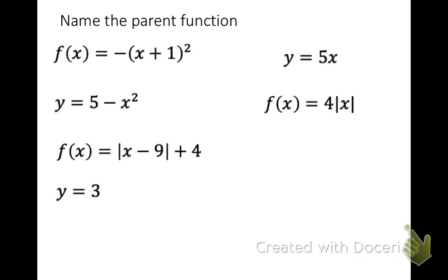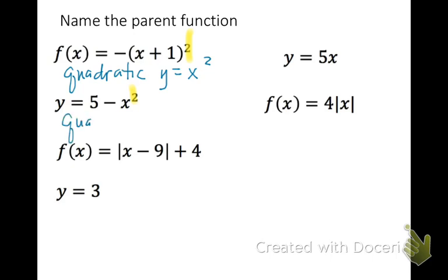So f of x equals negative x plus 1, squared. Right here I notice I have a square. That's going to indicate to me that this is a transformed quadratic parent function of y, or f of x equals x squared. y equals 5 minus x squared — I have another squared, so that's also a parent quadratic function.